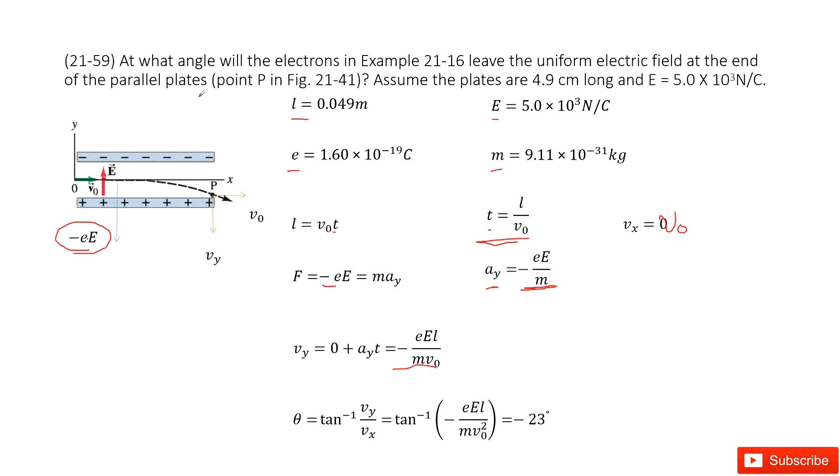Next question, at what angle will the electron leave? To find this angle, use theta equals arctangent vy over vx. Input all the given quantities and get the answer there. Thank you.